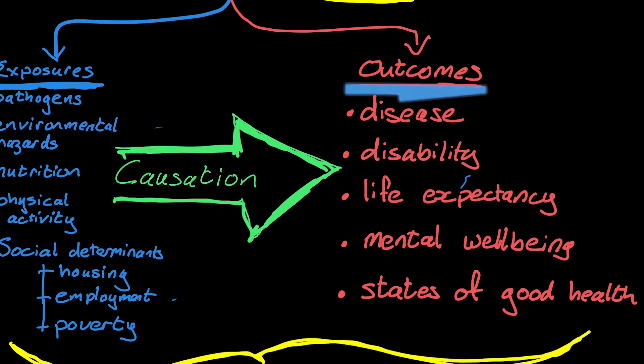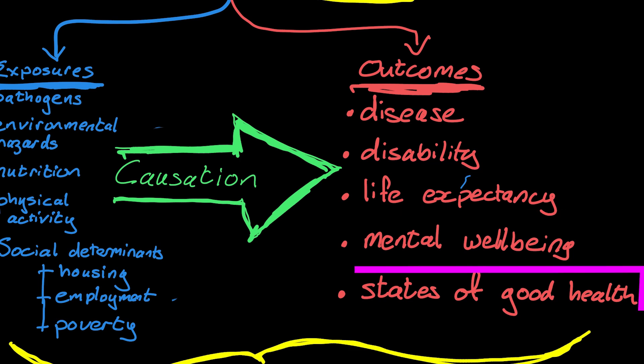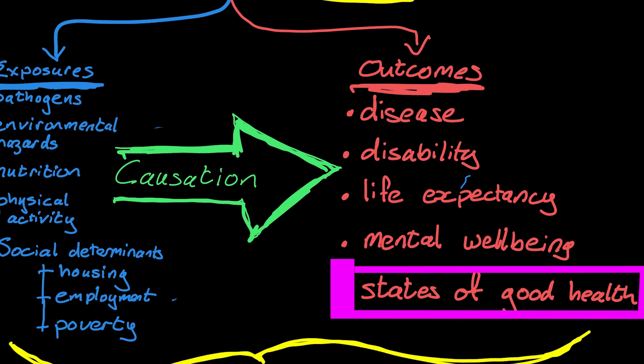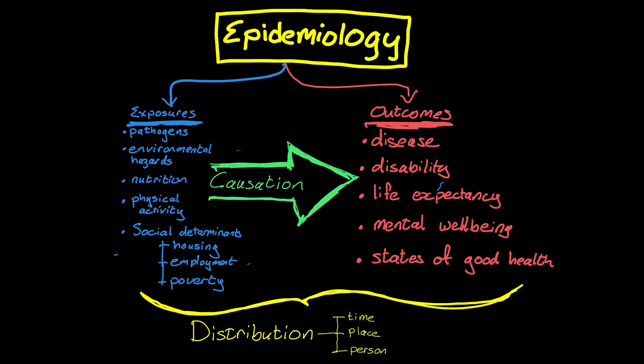Outcomes, as you can imagine, include disease — but people often stop at disease. It's more than that. It could be disability, life expectancy, mental well-being, any other state of good health or any other outcome that you might be interested in.